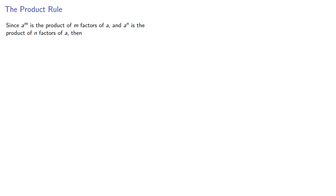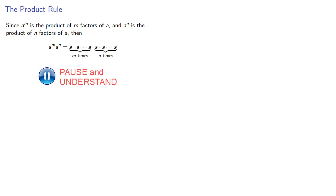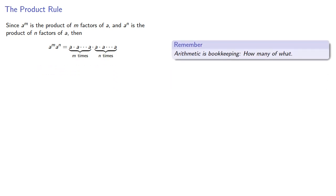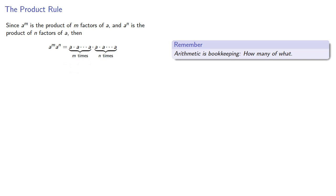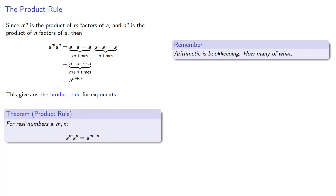You're probably wanting a formula anyway, so here goes. Since a to the mth is the product of m factors of a, and a to the nth is the product of n factors of a, then a to the mth times a to the nth will be m factors of a multiplied by n factors of a. Arithmetic is bookkeeping — we have m plus n factors of a, so we can rewrite this as a to the (m+n)th power. This gives us the product rule for exponents: if we multiply two exponential expressions with the same base, the product will have the same base and the exponent will be the sum of the exponents.